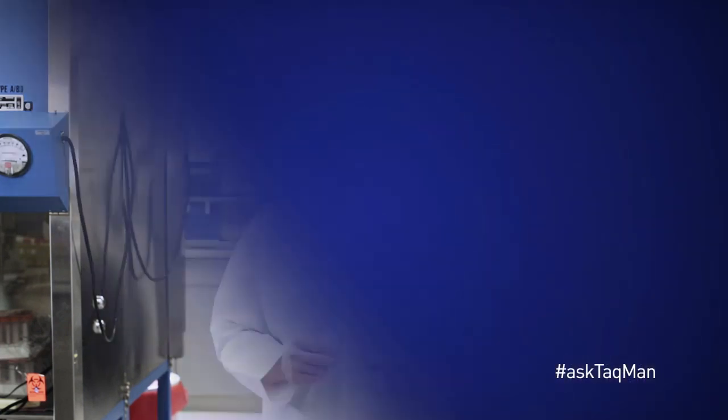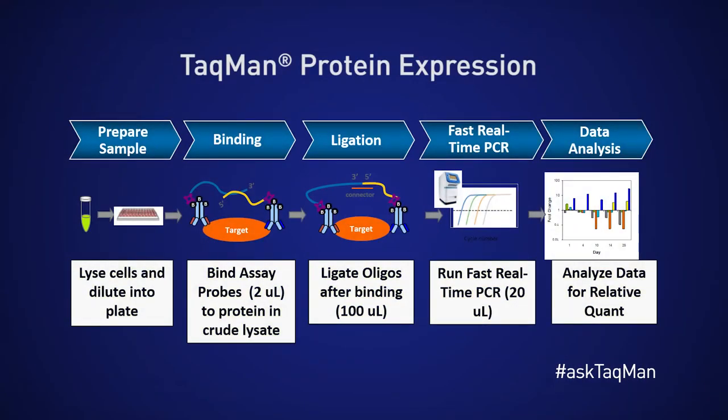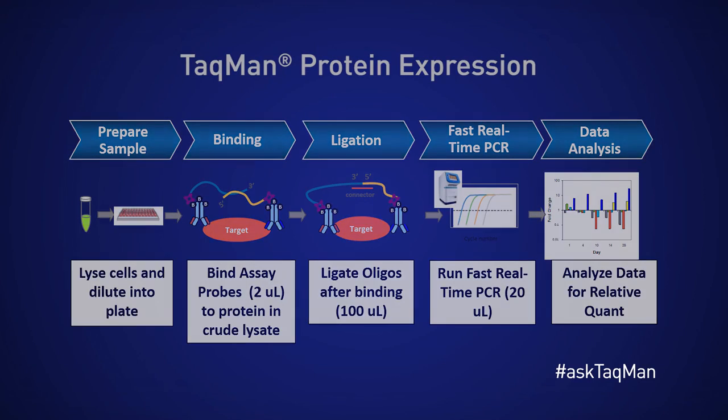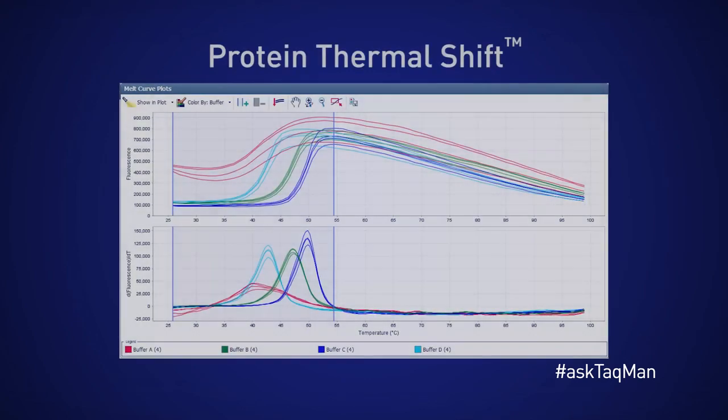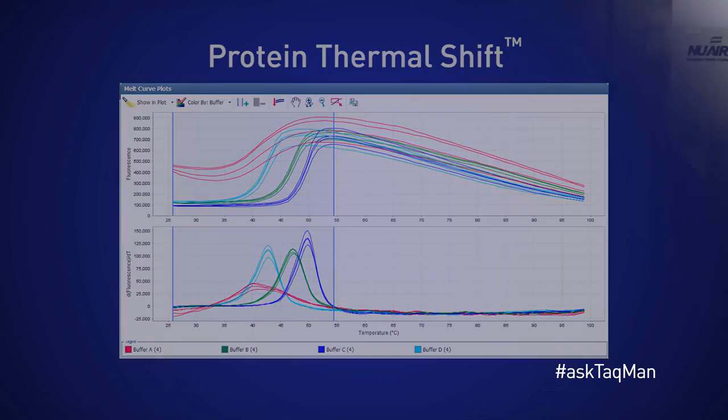Besides nucleic acid-based work, real-time PCR is increasingly being used to look at proteins. Two applications worth mentioning are Life Technologies' Protein Expression Technology, which lets users determine relative expression levels of specific protein targets, as well as the Protein Thermal Shift Assay — the perfect application for screening different buffer conditions and ligands for their effect on protein thermal stability.